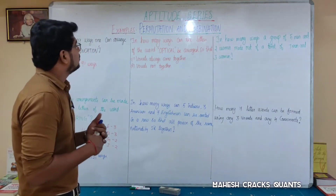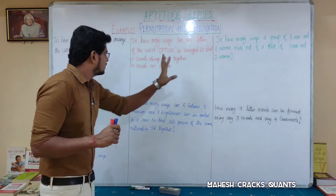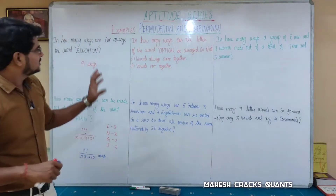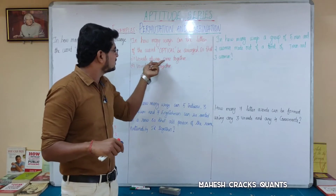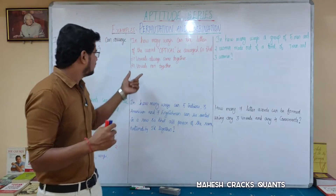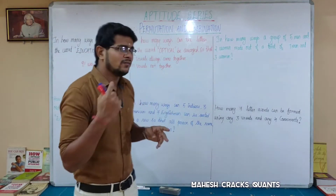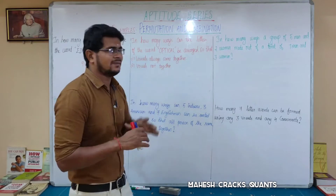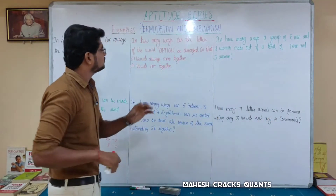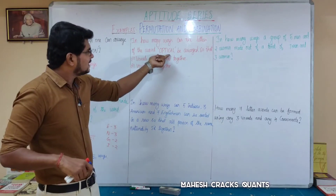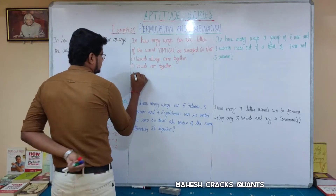Next question: in how many ways can the letters of the word 'optical' be arranged so that vowels always come together, and vowels not together? For the total arrangements, how many letters are there? 2, 4, 6, 7 — there are 7 letters, so 7-factorial ways can be arranged. First case: vowels are always together.